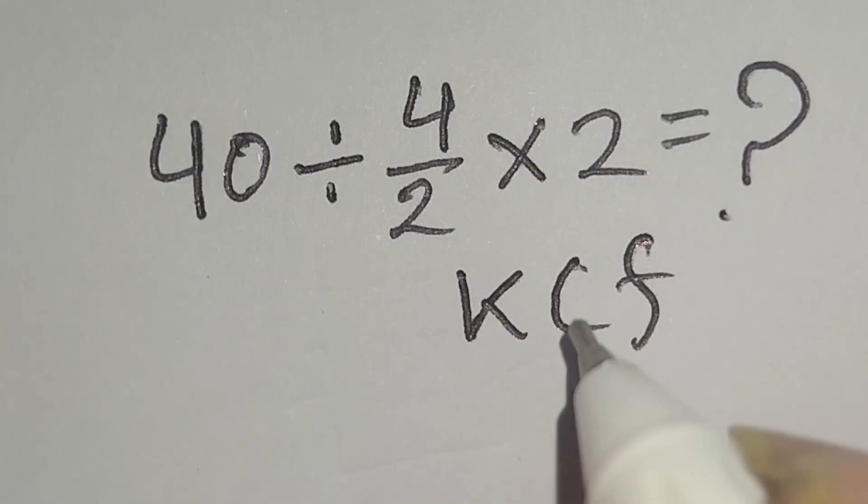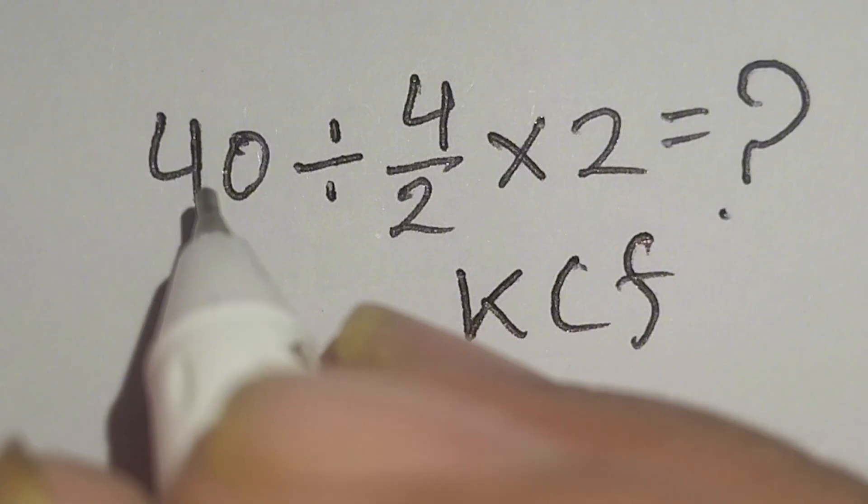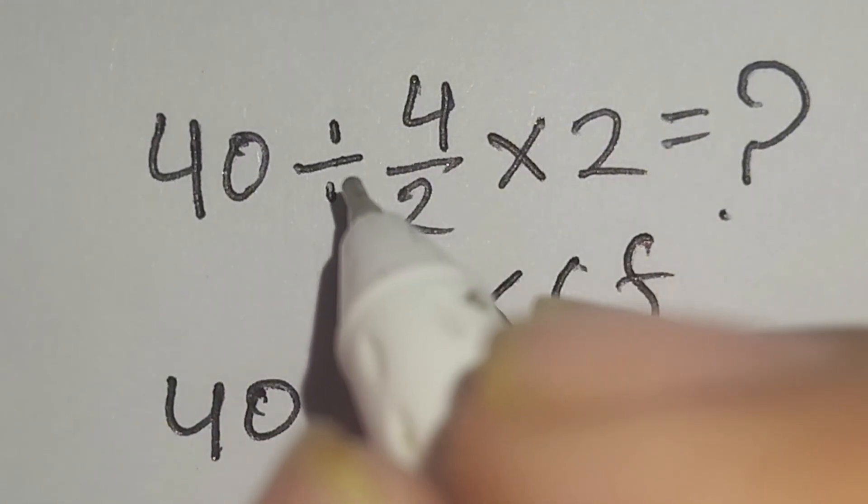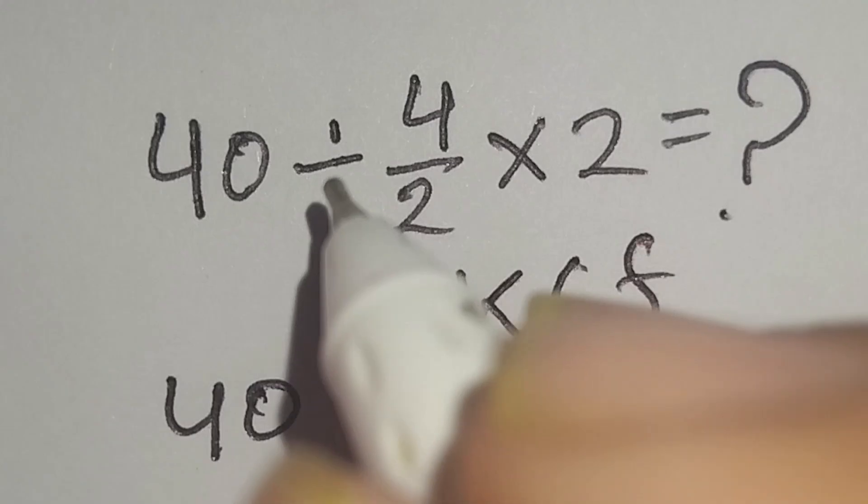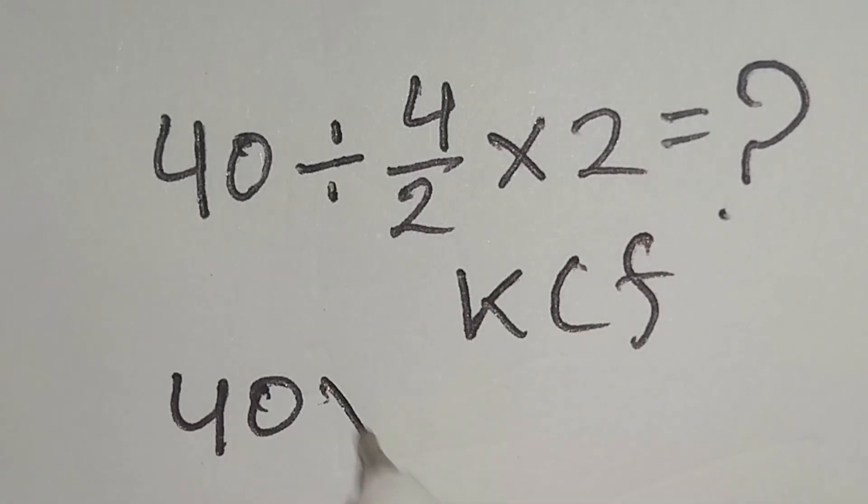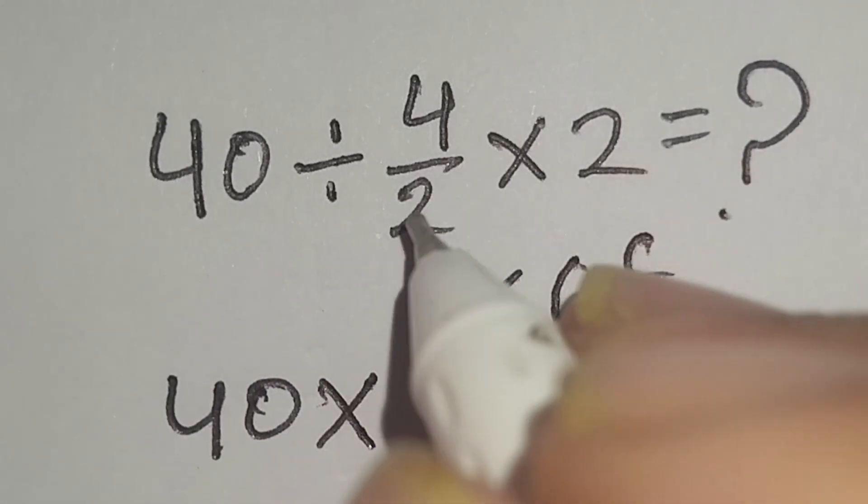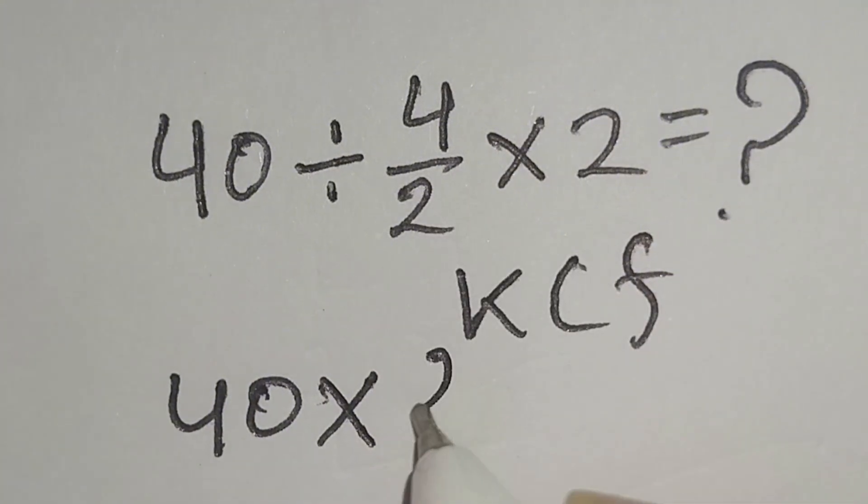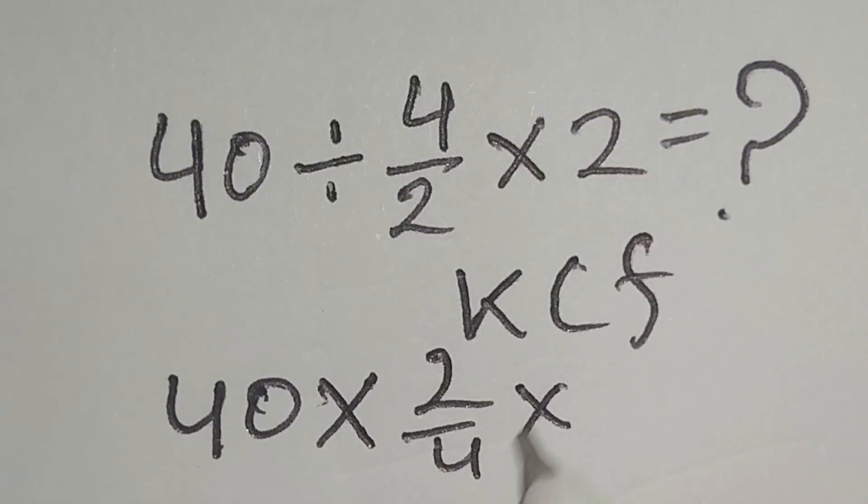Here we will keep this 40, yes 40, and change this division by multiplication. Here, 40 multiply, and flip this 4 over 2 as 2 over 4, multiply this 2.